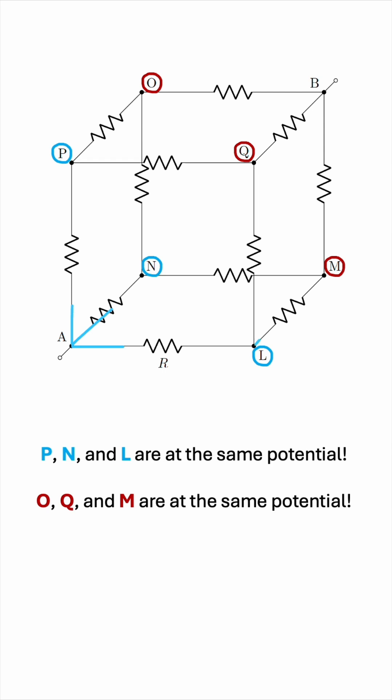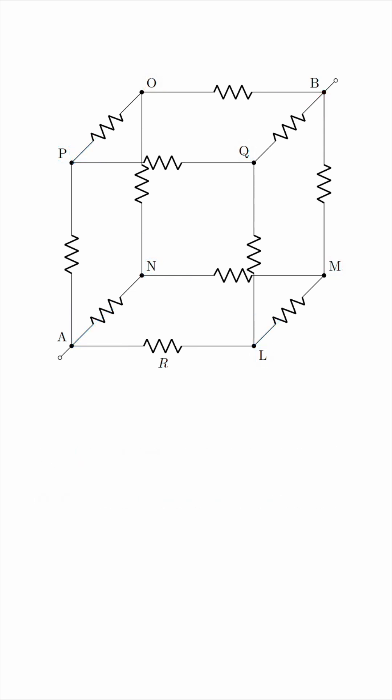For example, at node L we have those two branches. At node N we have those two, and at node P we have those two. And then each pair adds up, and eventually we have three branches that combine at node B. Can you see it? Okay, so this information, combined with knowing which nodes are at the same potential, allows us to redraw this 3D structure as follows.